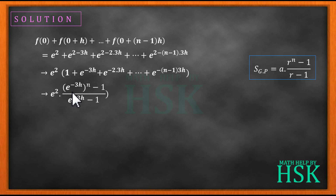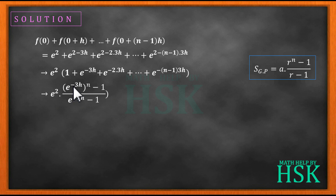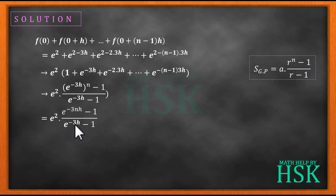So the total can be written as e squared into (e to the power of minus 3h) to the power of n minus 1, upon (e to the power of minus 3h minus 1). Since the bracket is raised to the power of n, I can write this as e squared into (e to the power of minus 3nh minus 1) upon (e to the power of minus 3h minus 1).